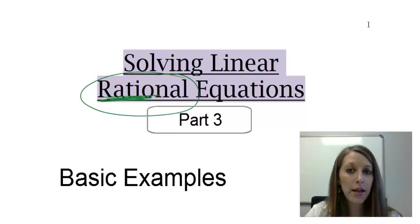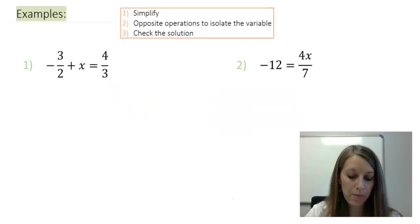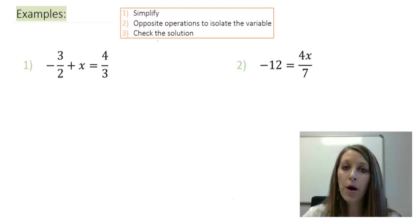The steps are going to be exactly the same as the linear equations, so we're going to jump right into some examples. I have two examples at this time. Again, the steps are exactly the same as linear equations: simplify each side of the equation individually, move things about the equal sign by doing opposite operations, and that should give you your solution. Then you can check your final answer. At this point I suggest that you pause the video and see if you can work both of these examples on your own.